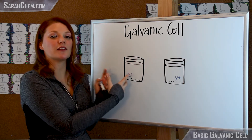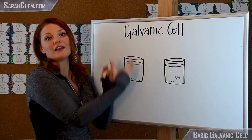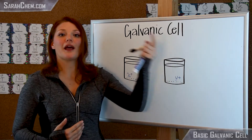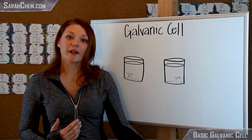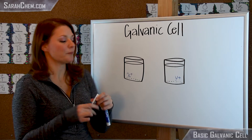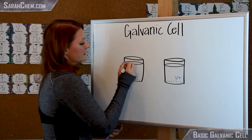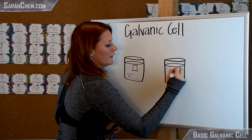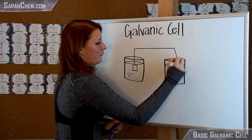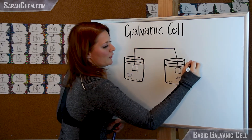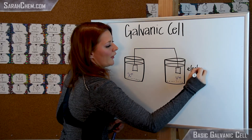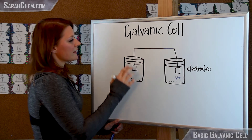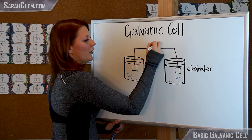Now we're going to have to connect these two, because if this side is willing to give electrons up, the other side would have to be willing to take them. The electrons need a way to transport from one location to the other, so we connect these with electrodes.